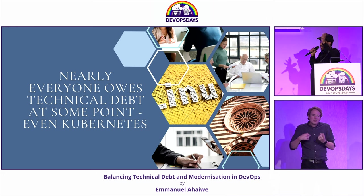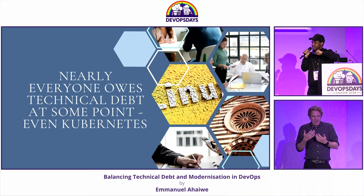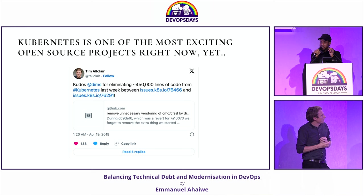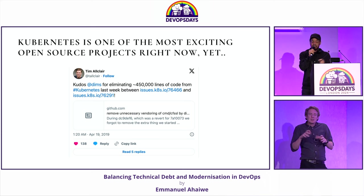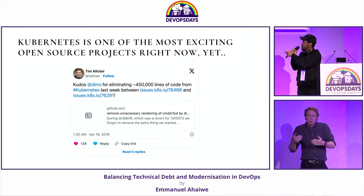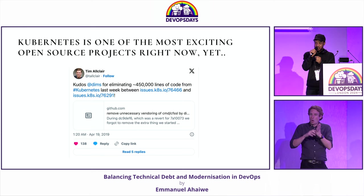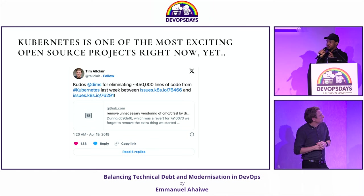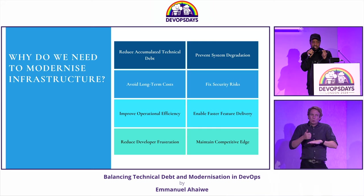Even the almighty Kubernetes, one of the most exciting projects out there. You'll see that in 2019, Tim tweeted that Kubernetes was removing 450,000 lines of code from Kubernetes, which is one of the well-built open source products. And that shows that everybody has technical debt.